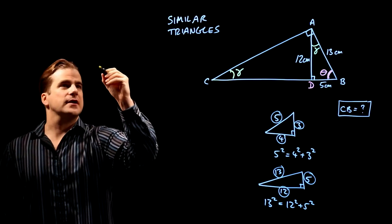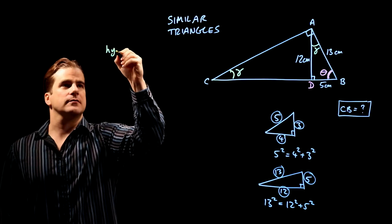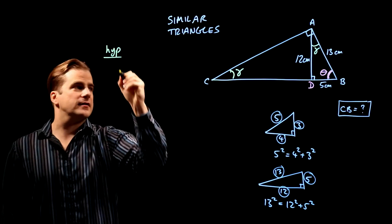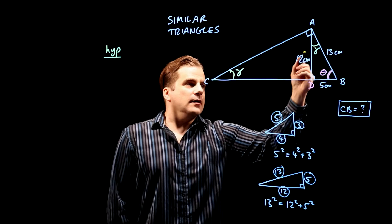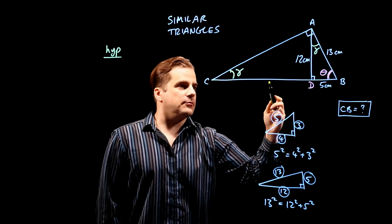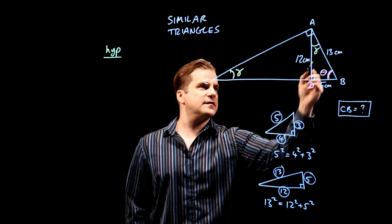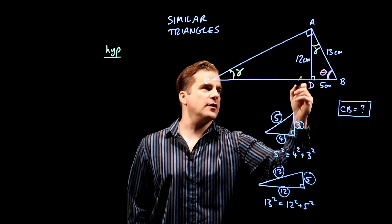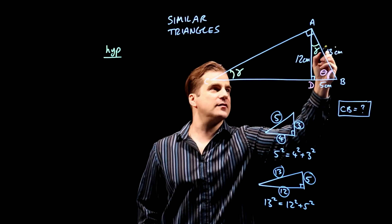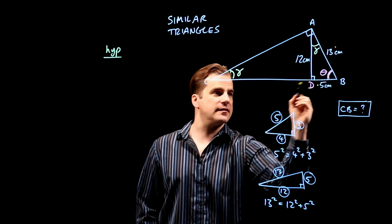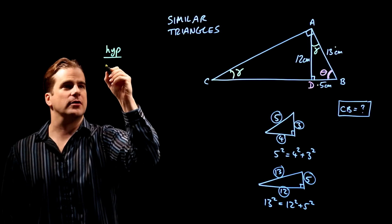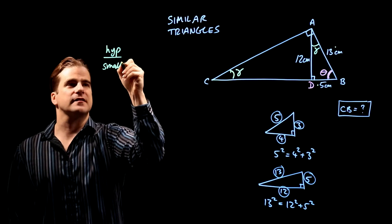We can say that the hypotenuse divided by, let's say, we'll call it the smallest side. So for the big triangle, the smallest side is this one, for the little triangle, the smallest side is this one.